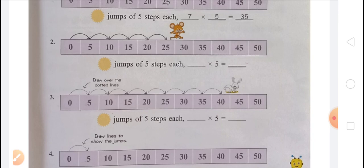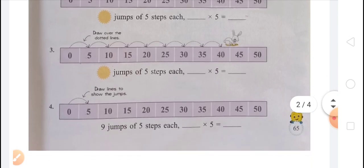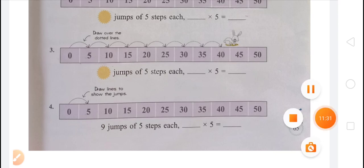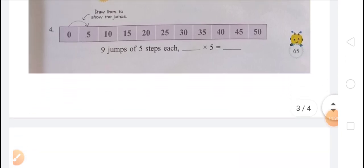In the fourth, you can see that you have to draw 9 jumps: 0 to 5, 5 to 10, 10 to 15, 15 to 20, 20 to 25, 25 to 30, 30 to 35, 35 to 40, and 40 to 45. You have to draw it with pencil. There are 9 jumps and in each jump there are 5 steps. So multiplication fact will be 9 multiplied by 5 equals 45, because 9 is the number of jumps and 5 is the number of steps in each jump.